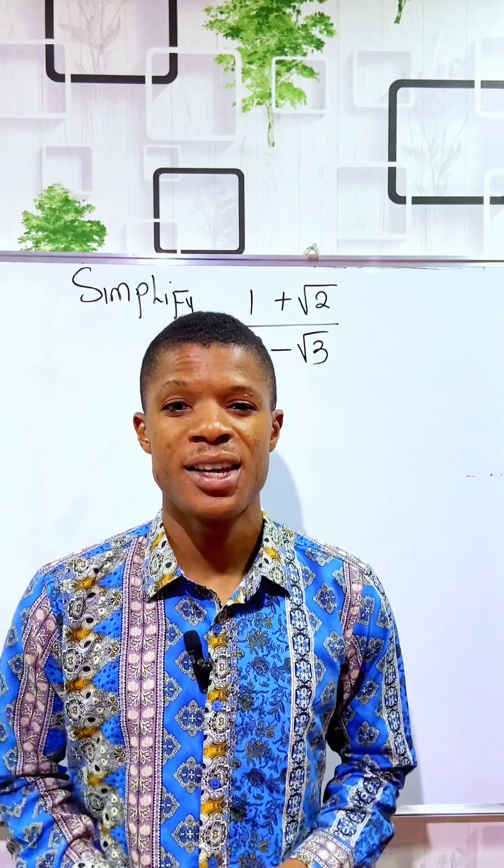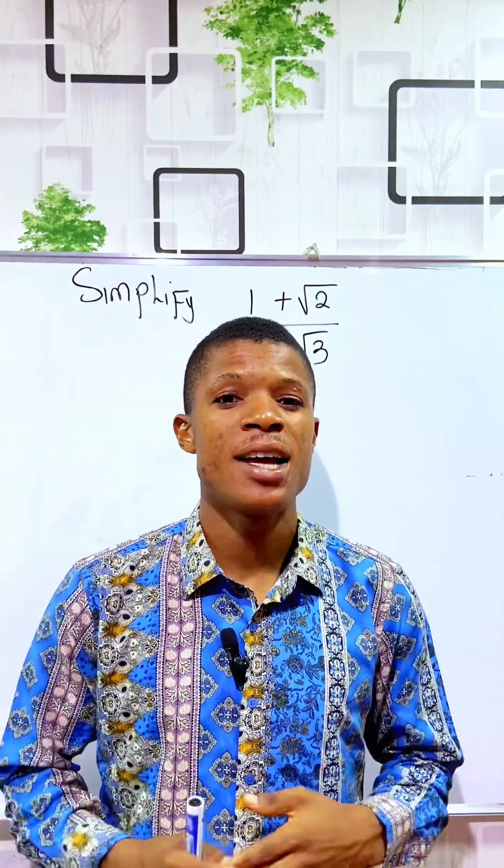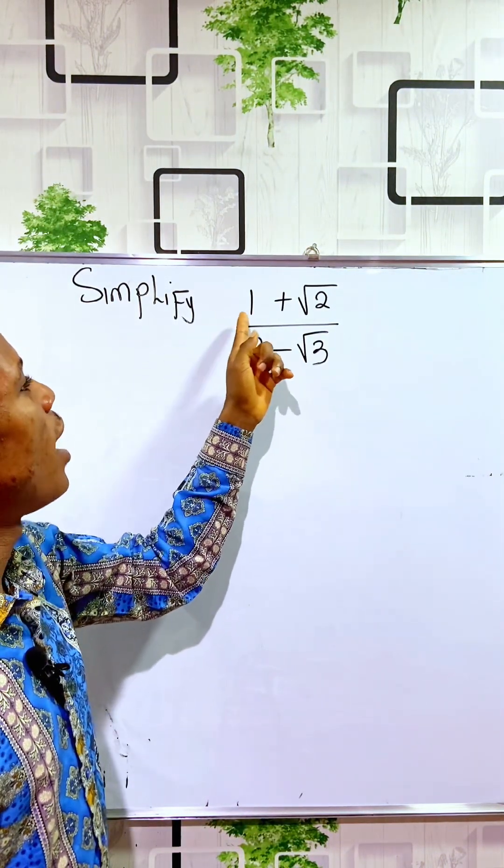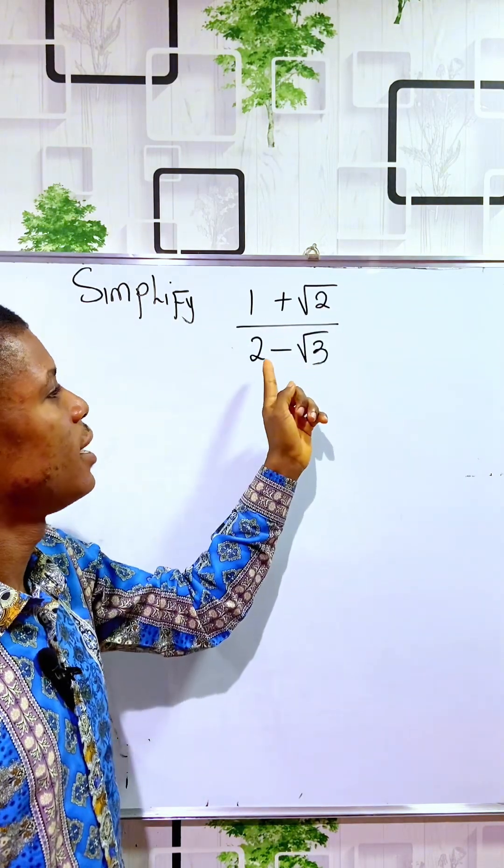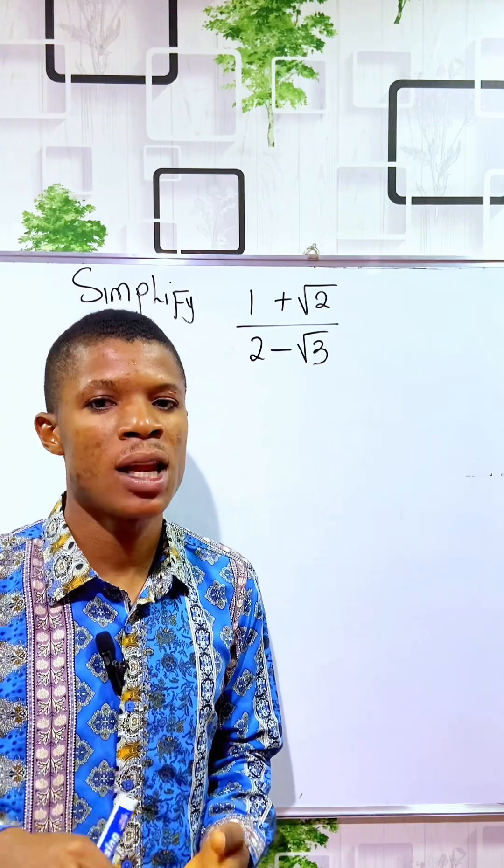Hi guys, how are you doing? Today in this video we will learn how to rationalize surds. We are told to simplify (1 + √2) divided by (2 - √3). We are going to learn how to rationalize surds by conjugate.